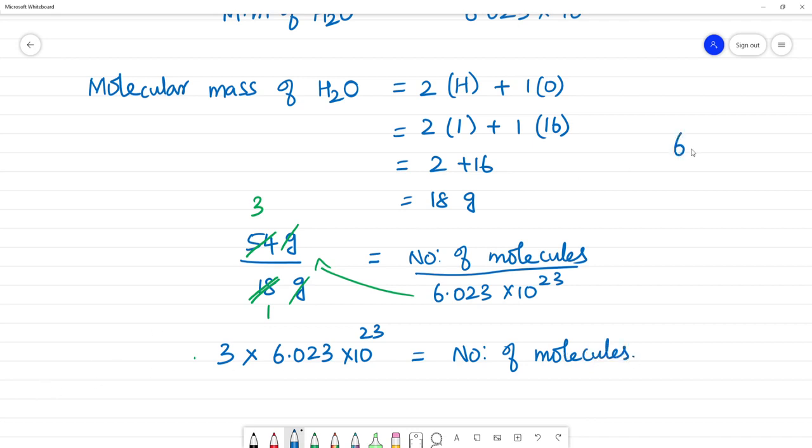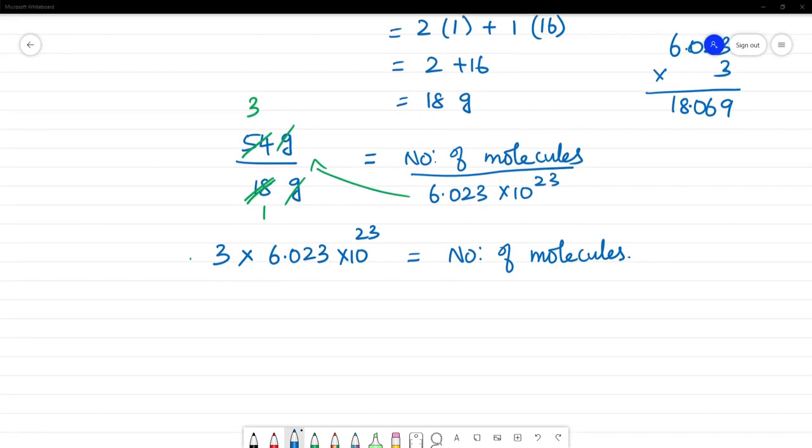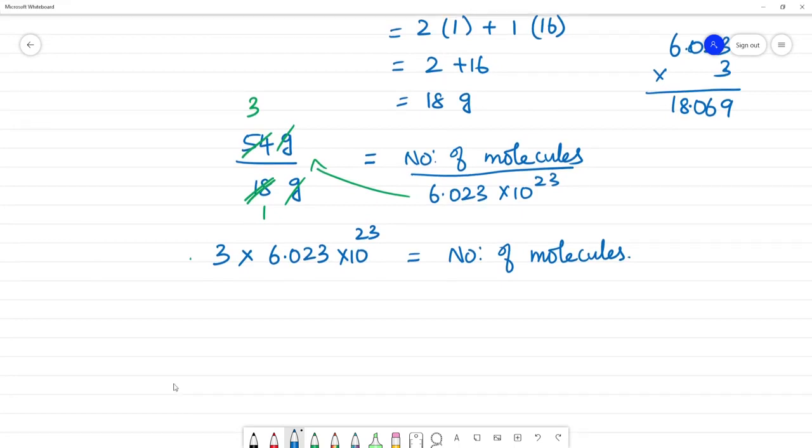Multiplying 6.023 by 3: 3 threes are 9, 2 threes are 6, 3 into 0 is 0, 6 threes are 18. How many decimal points? One, two, three decimal points, giving 18 point. This equals number of molecules: 18.023 into 10 to the power 23. Clear?